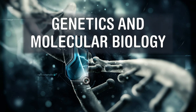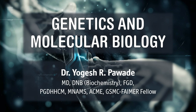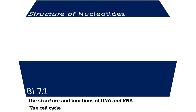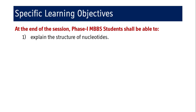Hello everyone, welcome to the very first session in this lecture series on genetics and molecular biology. I am Dr. Yogesh Powdery. Coming to the first competency in this lecture series, that is BI 7.1, which deals with the structure and functions of DNA and RNA and the cell cycle. In this session we are going to cover the structure of nucleotides. At the end of the session, Phase 1 MBBS students shall be able to explain the structure of nucleotides.